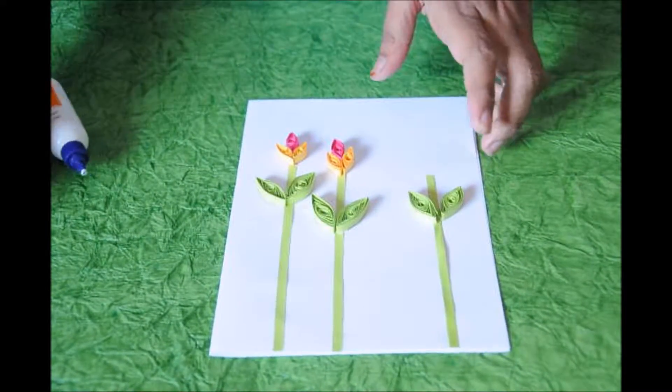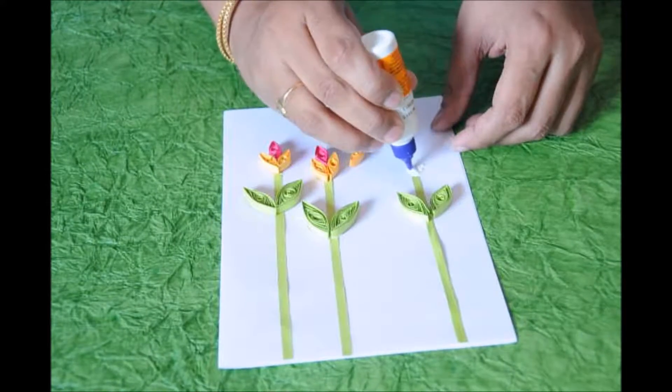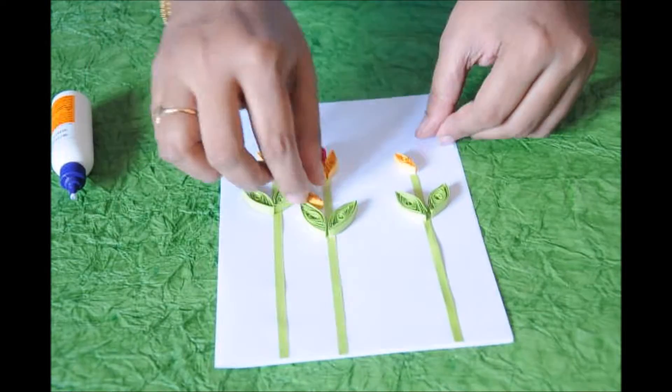And then the flower on the top. The yellow ones on the down and the pink one in the middle. Yellow petals on either sides and the pink one in the center.